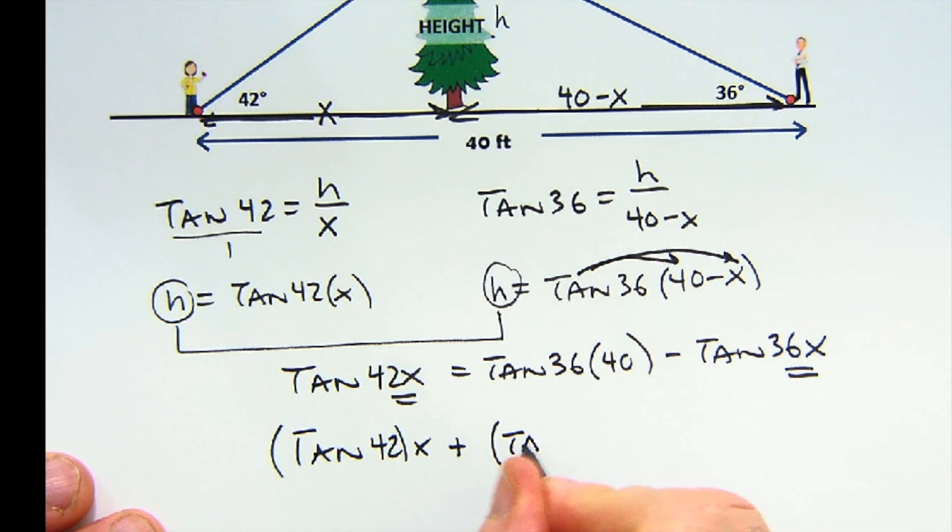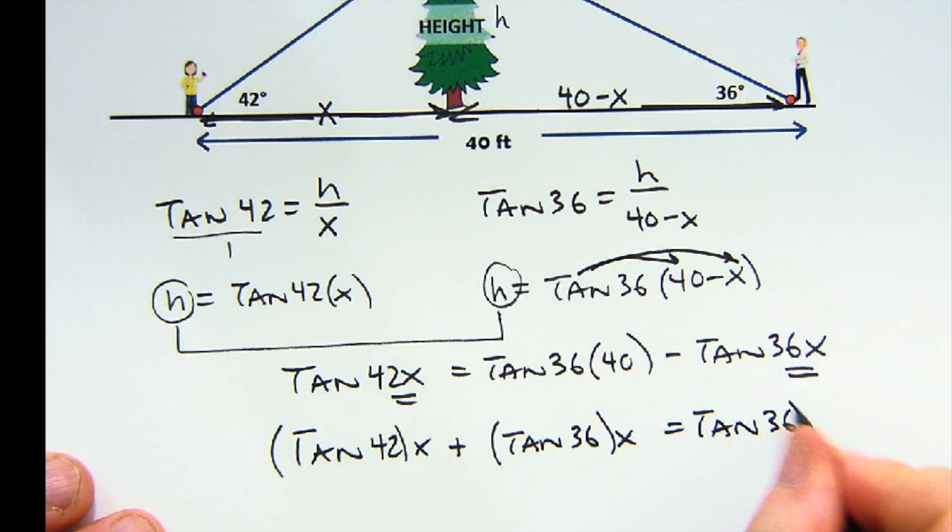And I think I'm ready to turn all these into decimals for you. I personally don't do it that way, but the tangent of 42 is 0.900x, and the tangent of 36 is 0.727x, and the tangent of 36 times 40 is 29.06.